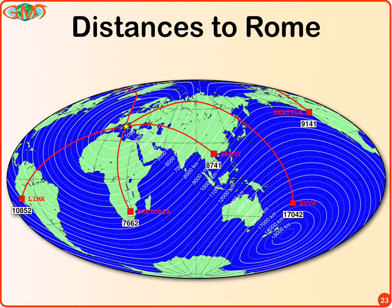All roads lead to Rome, but it goes a lot faster if you can go great circle. This map shows distances to Rome in kilometers throughout the world with a few selected locations, great circle arcs, and distance annotations. The script that created this is maybe five or six lines — it does all the calculations, determines all the numbers, and places all the legends. It's pretty simple, actually.